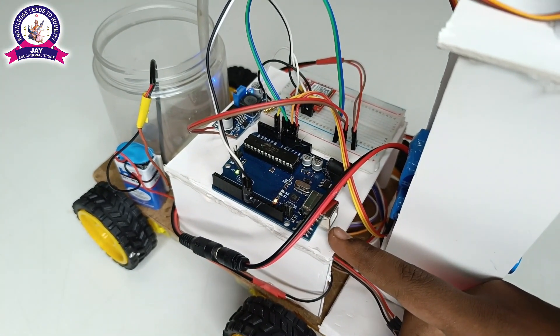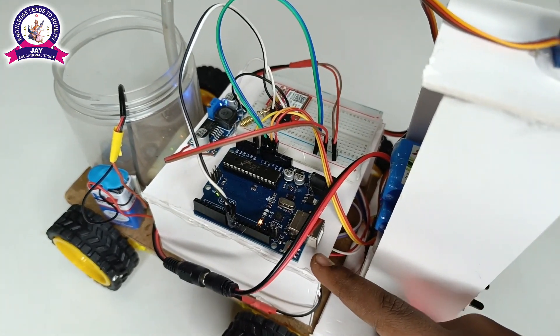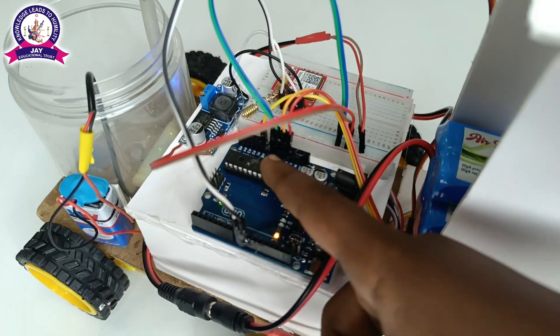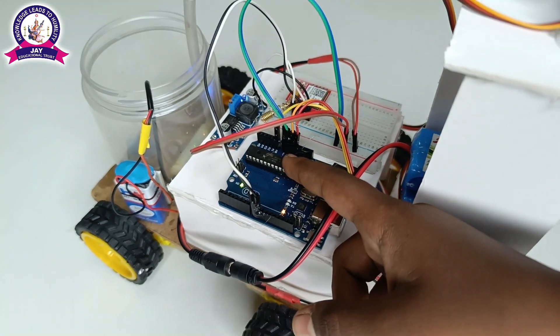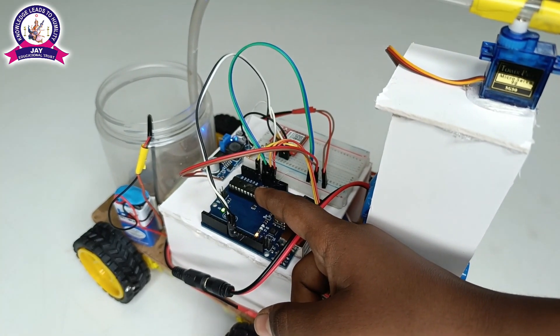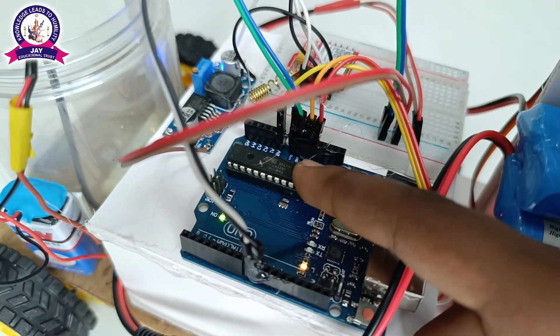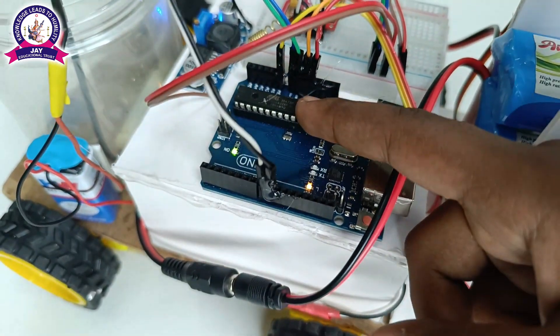Arduino UNO is an open source microcontroller board based on the Microchip ATmega 328P microcontroller, developed by Arduino and initially released in 2010. This is the ATmega 328P IC. It has 28 input and output pins.